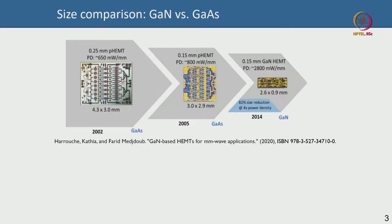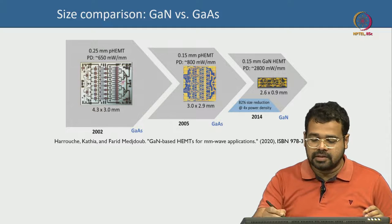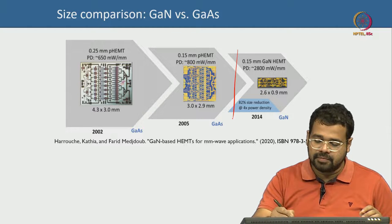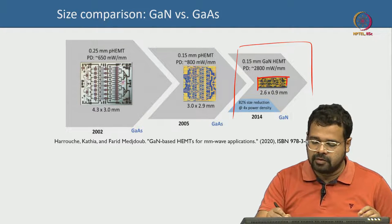This image, likely taken from Qorvo, illustrates how the GaN device offers advantage in terms of size and density. You can see a gallium nitride HEMT die — it is very small. It is probably an MMIC in a 0.15 µm gate length technology.